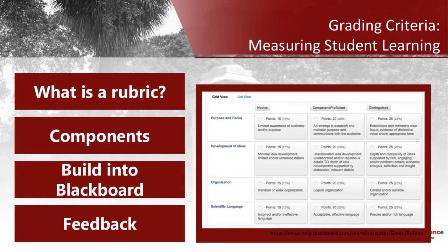A rubric is a scoring guide used to evaluate students' graded work using specific and descriptive criteria tied to the course grading policy and learning outcomes. This explicitly addresses Quality Matters standard 1.7. Using rubrics can help ensure consistent and more objective grading, clarify students' expectations, and reduce the number of questions you receive. If you're using rubrics in Blackboard, students can actually see the rubric and any feedback you provide. Make sure you set it up so that students can see it.